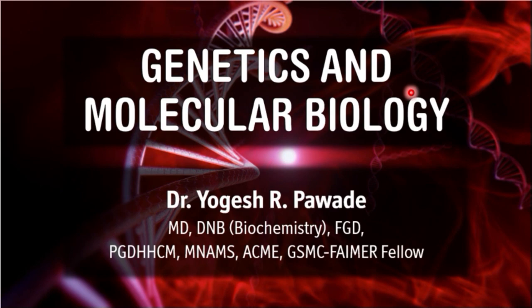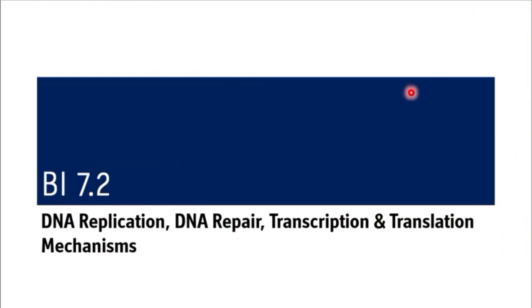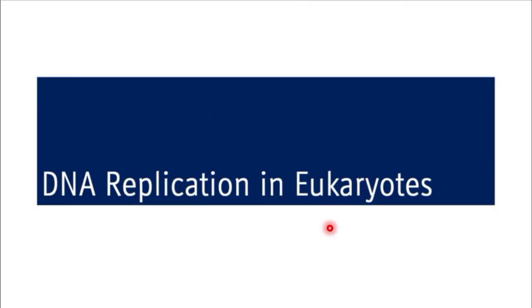Now coming to BI 7.2, which deals with DNA replication, DNA repair, transcription and translation mechanisms, and various regulatory factors as well as the inhibitors of replication, transcription and translation. In today's session we will discuss DNA replication in eukaryotes. The specific learning objective is that at the end of the session, the student shall be able to describe DNA replication in eukaryotes.